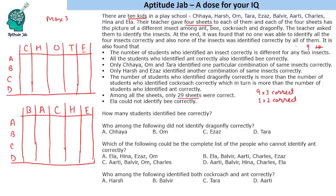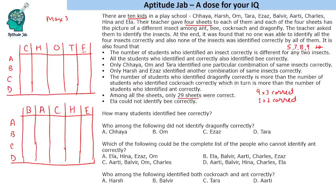The only combination of four different numbers up to 9 that sums to 29 is 5, 7, 8, 9. You can verify this — if you take 9, 7, 8, 6 you get 30, and we need 1 less than 30. So 5, 7, 8, 9 is the only valid combination. All the students who identified ant correctly also identified bee correctly, which means the number for ant is less than for bee. So ant will be identified by 5 people correctly.